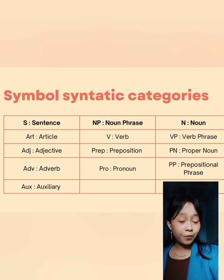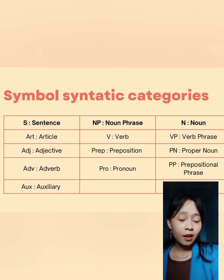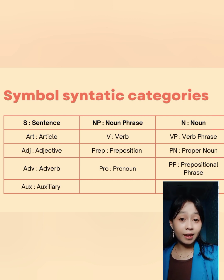Other symbols include: VP for verb phrase, V for verb, P for preposition, Adj for adjective, Prep for preposition, PN for proper noun, Adv for adverb, Pro for pronoun, and PP for prepositional phrase.